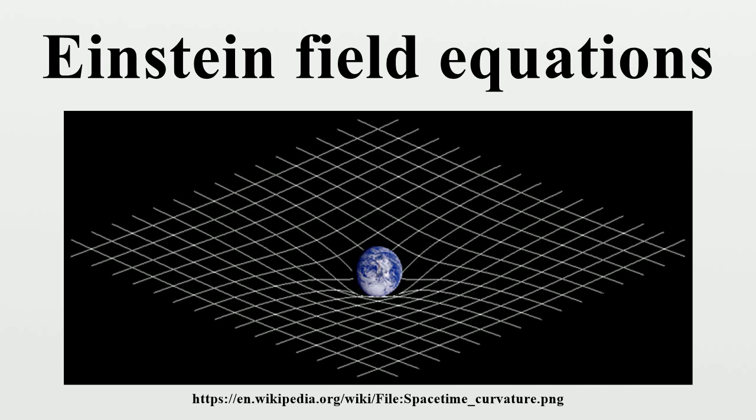This can be rewritten as: the expression on the left represents the curvature of space-time as determined by the metric. The expression on the right represents the matter-energy content of space-time. The FE can then be interpreted as a set of equations dictating how matter-energy determines the curvature of space-time.